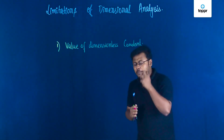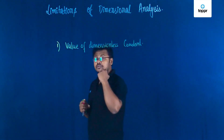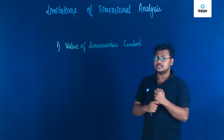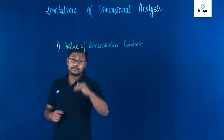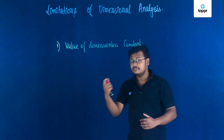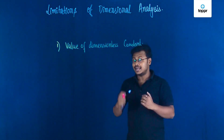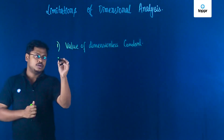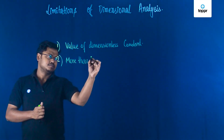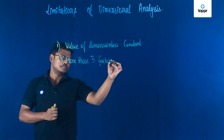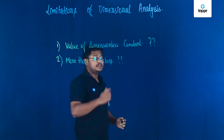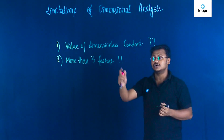Secondly, if any particular parameter or quantity depends on more than three factors, then you cannot analyze the value of that particular parameter. Because you will get only three equations by equating the powers of mass, length, and time. If any quantity is a function of more than three factors, you cannot determine its value using dimensional analysis. So number two is: issue of more than three factors.